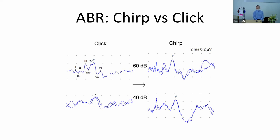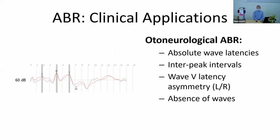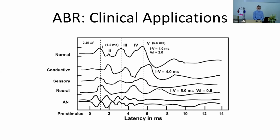The chirp stimulus maximizes wave 5 amplitude — the wave 5 produced with chirp is much larger, especially near threshold. There are two main clinical applications of ABR: one is assessing hearing thresholds objectively, especially useful for small children and infants, where we look for wave 5 thresholds and the latency-intensity function. The second is neurological ABR, where we look for absolute wave latencies and interpeak intervals at suprathreshold levels.